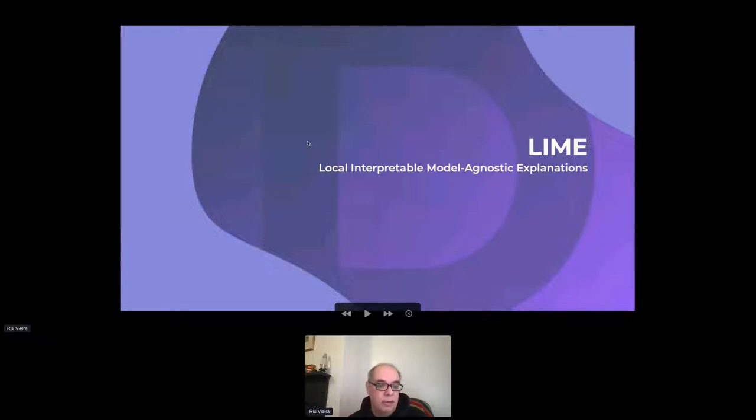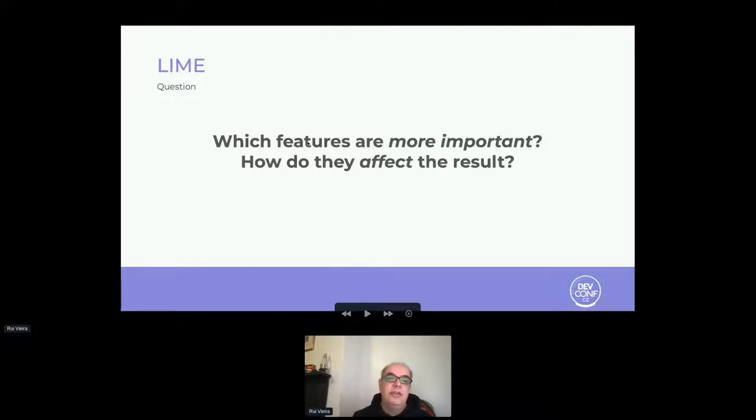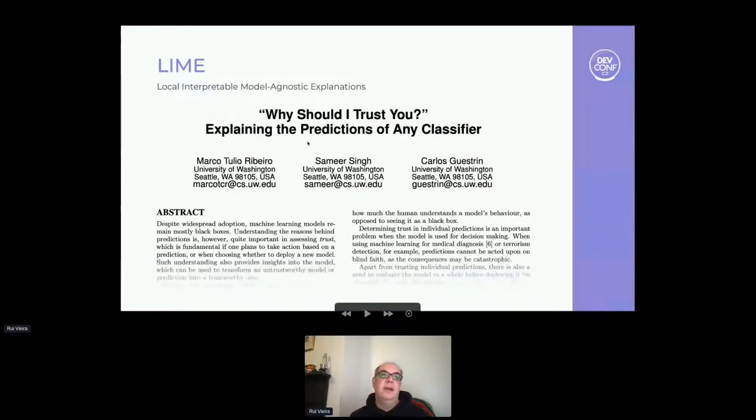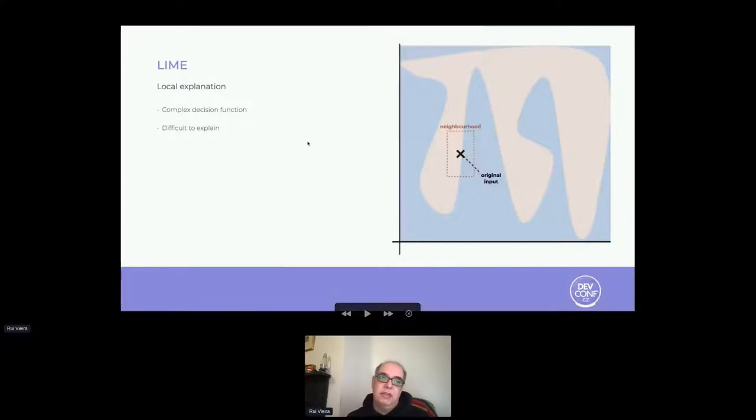TrustyAI provides several out-of-the-box explainability methods, which mostly fall in the post-hoc local model agnostic family. This includes LIME, counterfactual explanations, and SHAP. We'll look at each one of these methods individually. The first explainability method I'd like to talk about is Local Interpretable Model Agnostic Explanations, or LIME for short. LIME tries to answer the question of which features are more important and how they affect the result. LIME was first introduced in the 2016 paper 'Why Should I Trust You?' by Ribeiro, Singh, and Guestrin. LIME is part of the Local Explainer family. That is, LIME tries to explain potentially complex decision functions which are difficult to explain as a whole by focusing on a neighborhood of the prediction and providing an explanation locally consistent with the model.